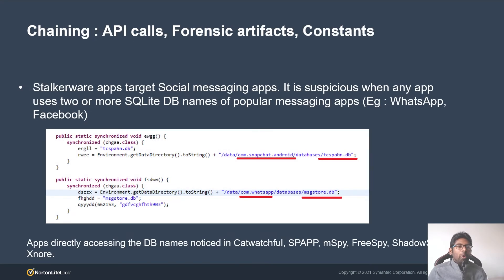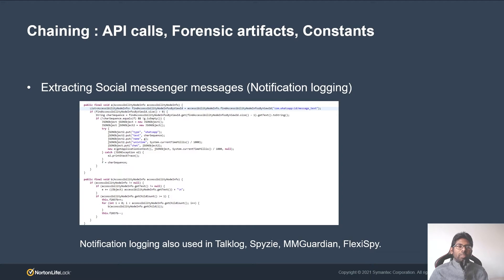Social messaging apps are popular these days, and stalkerware applications also target them. When they do, they track multiple social messenger applications using two widely-used techniques to extract messages. One is directly accessing the private database files — it is suspicious when any app uses two or more database names of popular social messaging apps, and those database names do not change often. We noticed similar implementations in Catwatchful, SPApp, MSpy, FreeSpy and other vendors. The second technique is tapping messages from notifications: instead of accessing private files, stalkerware apps extract messages from the notification. Similar implementations were seen in Talklog, FlexiSpy, MMGuardian and SPI-Z vendors.